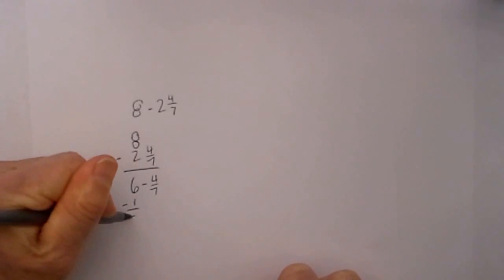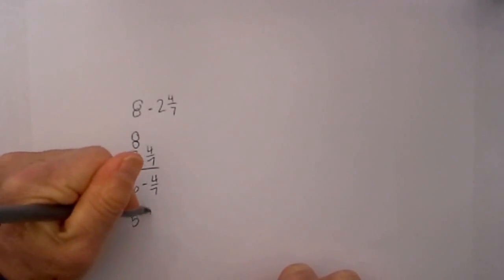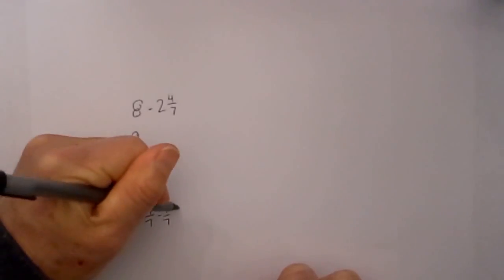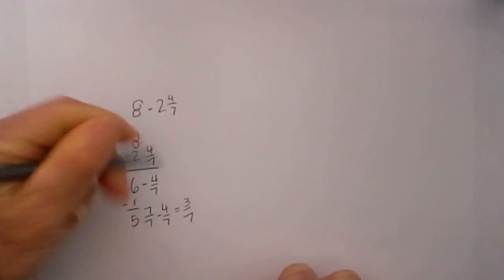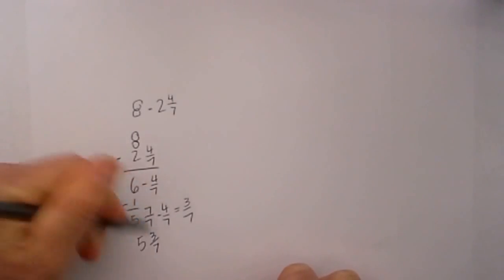I will subtract 1 from 6. This becomes 5. The 1 becomes 7 over 7 minus 4/7 equals 3/7. So the answer is 5 and 3/7.